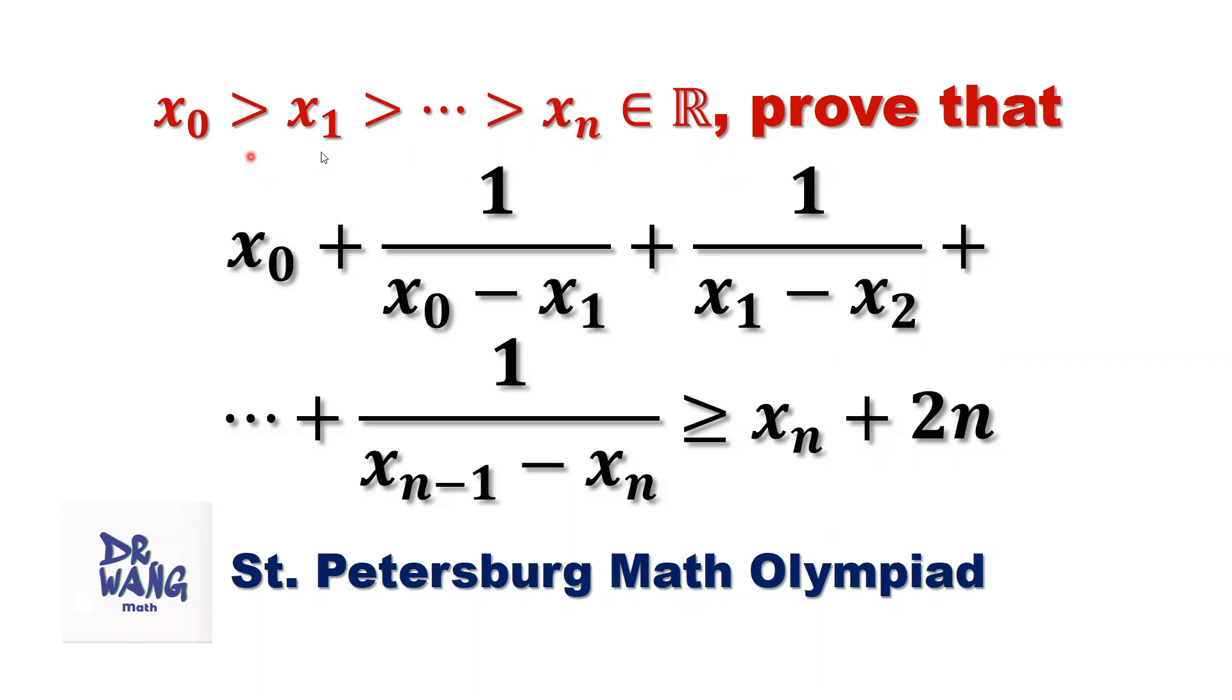Here, x0, x1, x2, until xn are real numbers. Prove that x0 plus 1 over x0 minus x1 plus 1 over x1 minus x2 plus ... plus 1 over xn minus 1 minus xn is bigger than or equal to xn plus 2n.